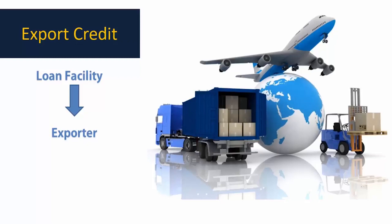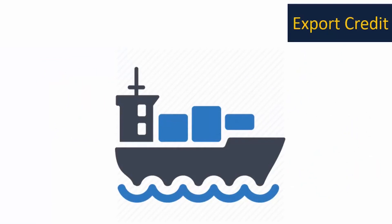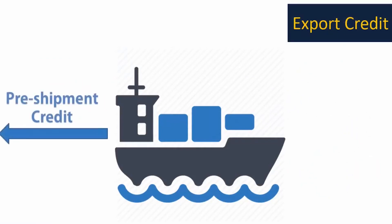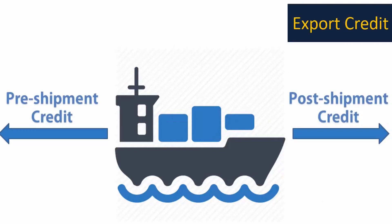So how are export credits funded? Export credits are funded in two different forms: one is pre-shipment credit and the other one is post-shipment credit. We will understand what pre-shipment credit and post-shipment credit are in the following sessions, but these are the two components in export credit.